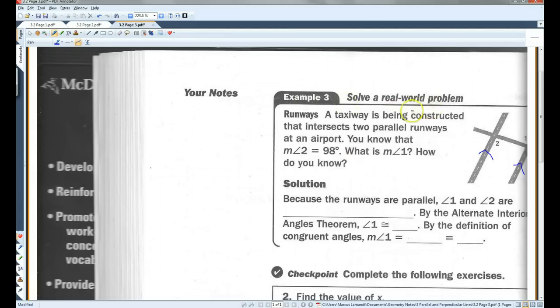You know that the measure of angle 2, draw these a little better. There we go. The measure of angle 2 is 98 degrees. What is the measure of angle 1?